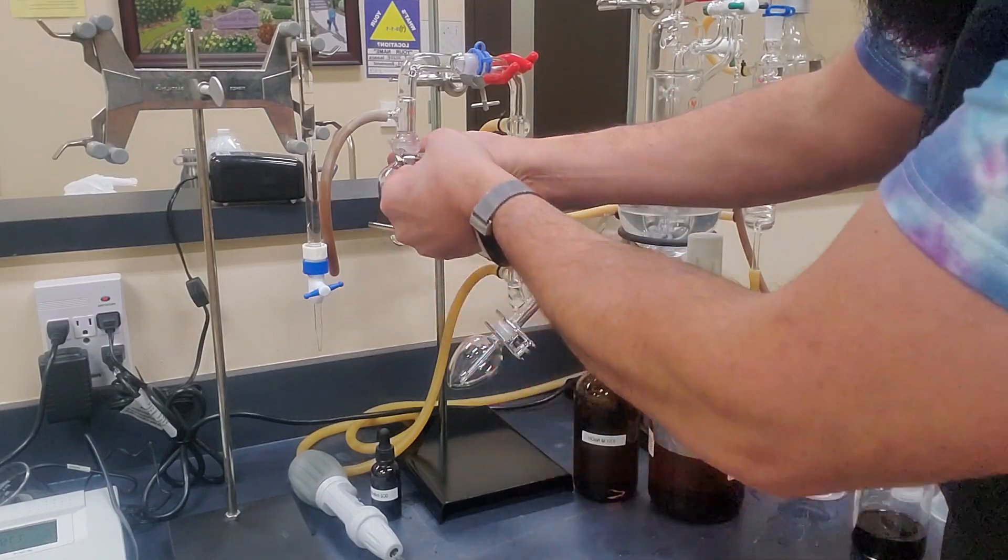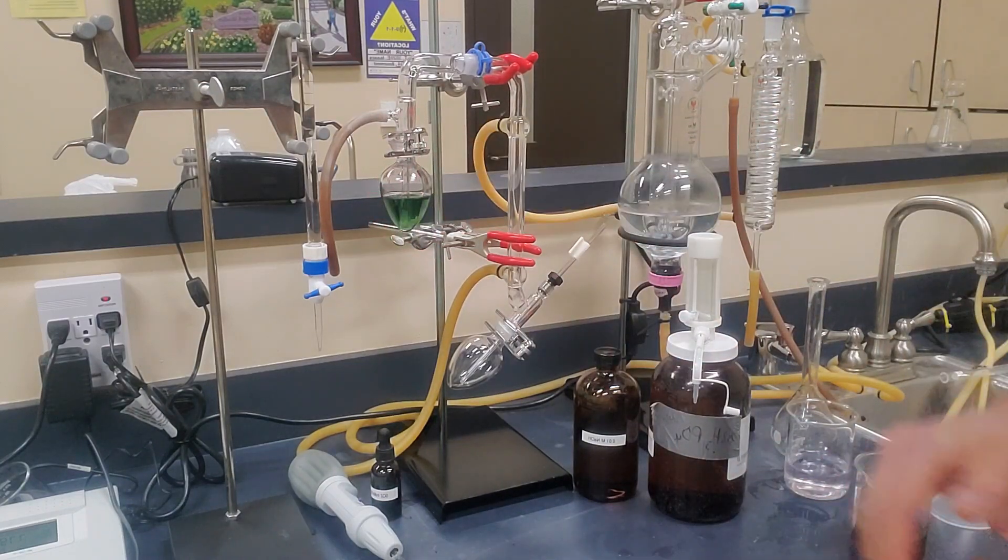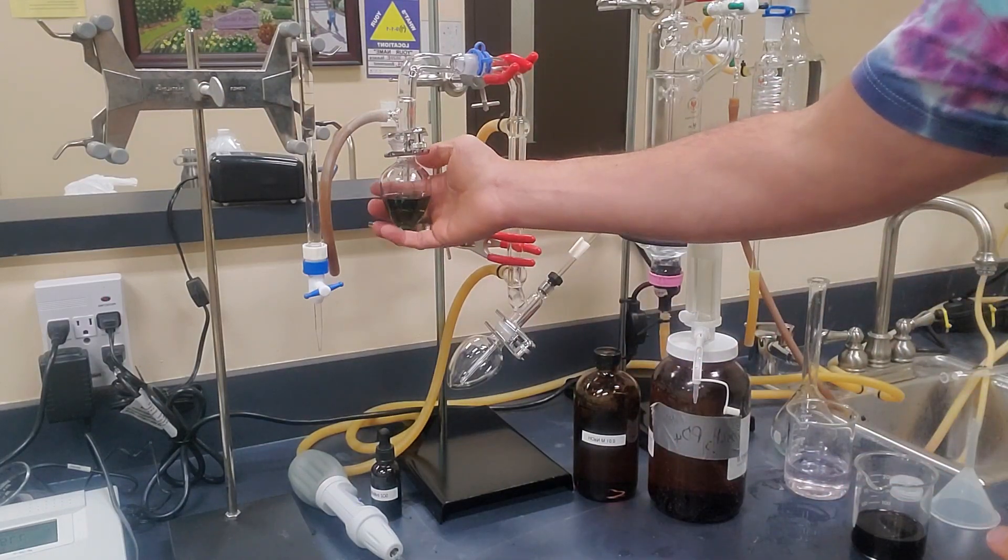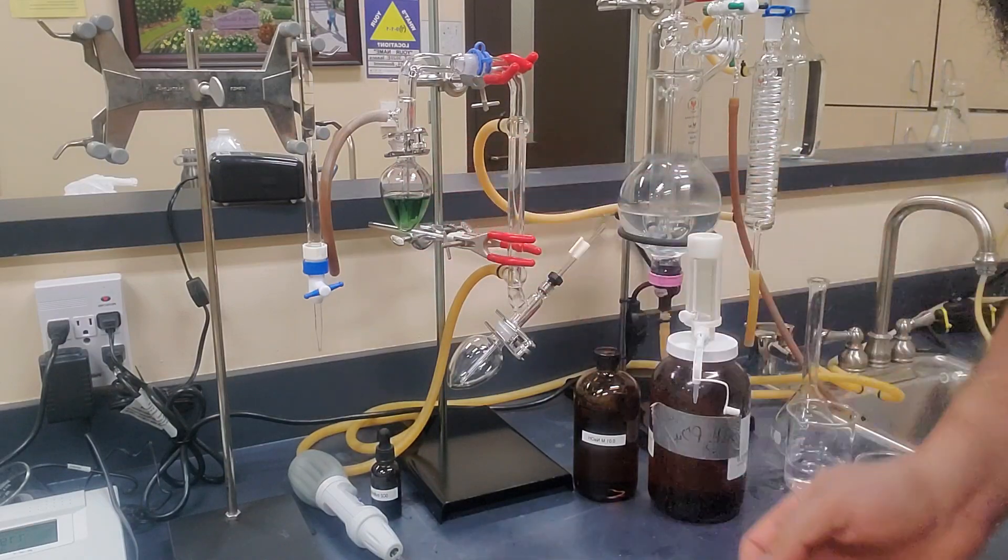And as soon as we get that all set up, we'll go ahead and put it on our machine here, our still. So that's step one is setting up the first flask. So hydrogen peroxide and a little SO2 indicator.